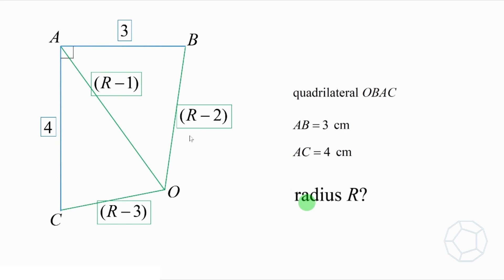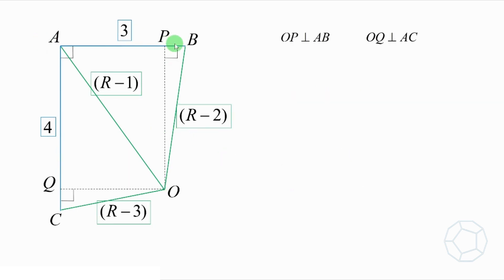Let's draw the line OP perpendicular to AB, and the line OQ perpendicular to AC. We have constructed a red rectangle OPAQ. We call AP equals to X cm, and AQ is equal to Y cm.